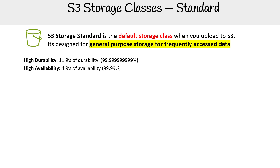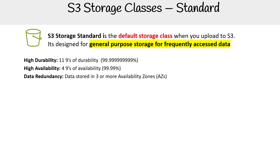For availability, it has four nines of availability, so it's quite highly available compared to the rest of the storage classes. For redundancy, it's stored in three or more availability zones, and they make additional copies even within an AZ.